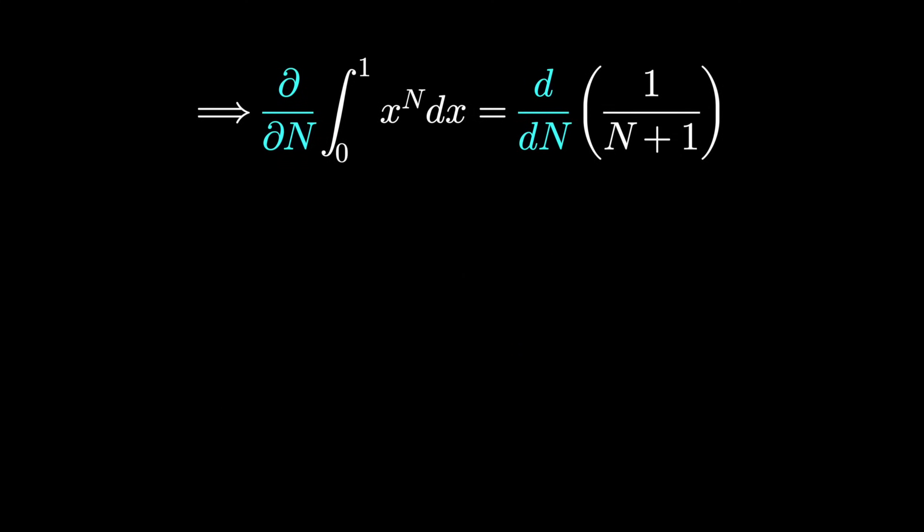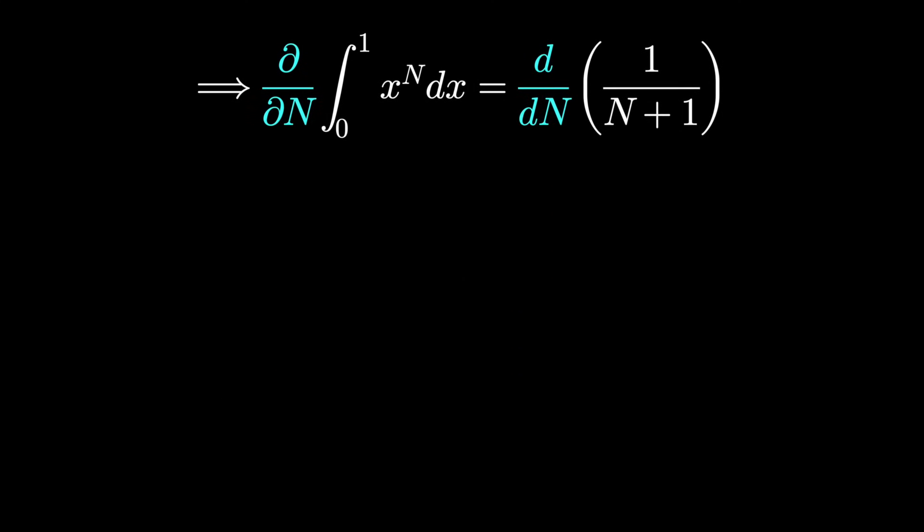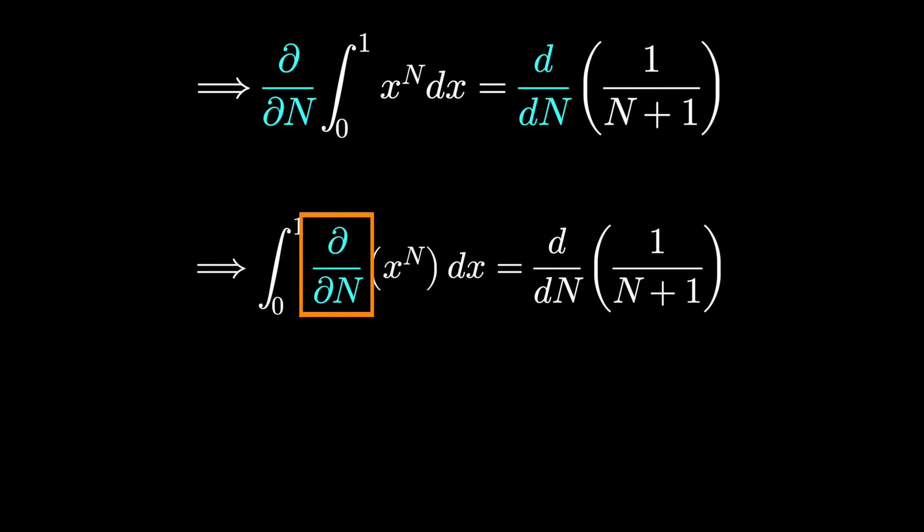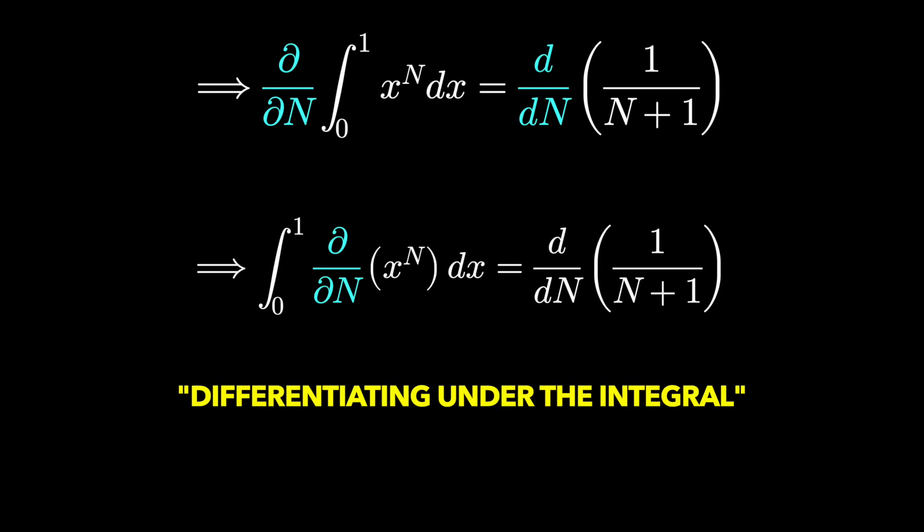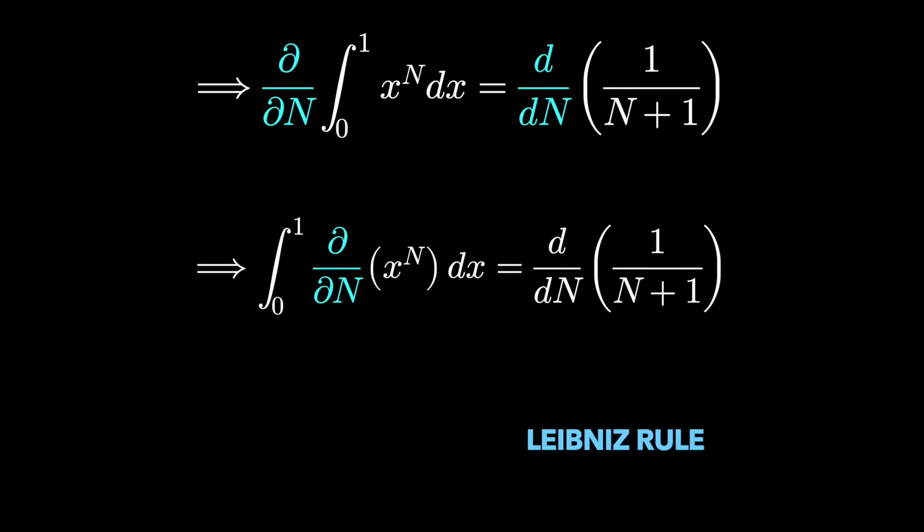And this is the trick I'm really trying to show you here, the fact that we can take this partial derivative inside the integral. This is known as differentiating under the integral. It's often called the Feynman trick or the Leibniz rule for integrals.